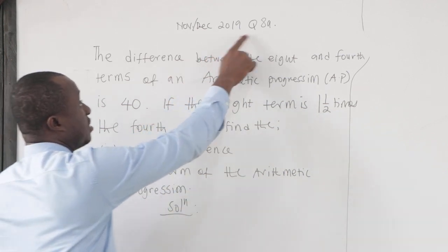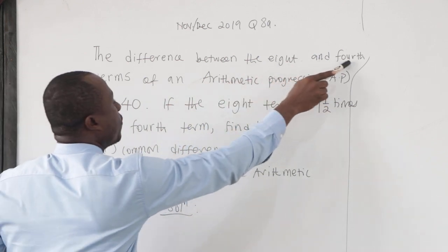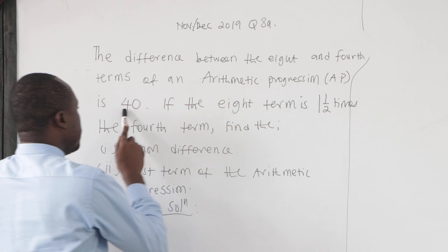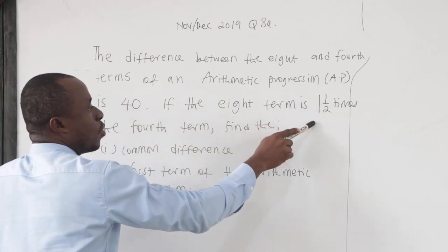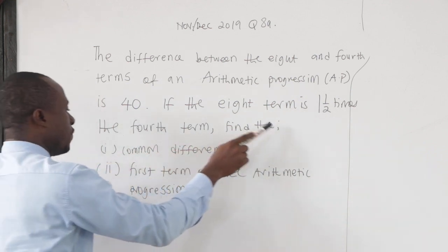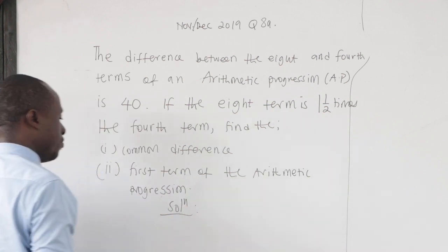Okay, this is Dovdeck 2019, question number 8a. The difference between the 8th and 4th terms of an arithmetic progression (AP) is 40. If the 8th term is 1½ times the 4th term, we should find the common difference and the 1st term of the arithmetic progression.